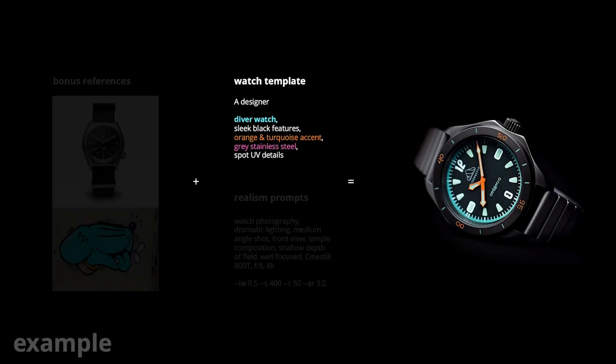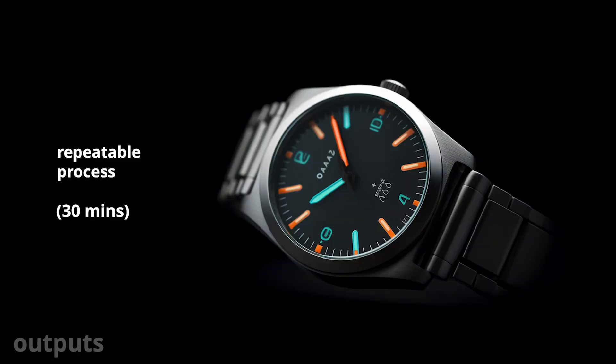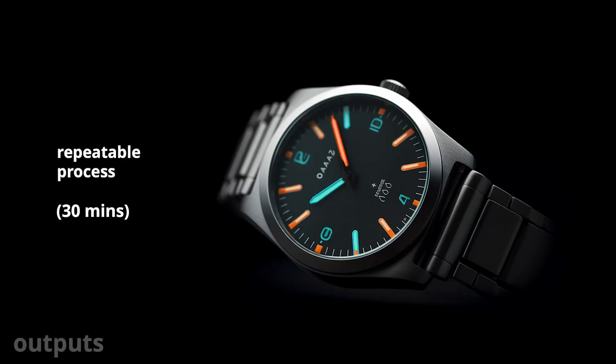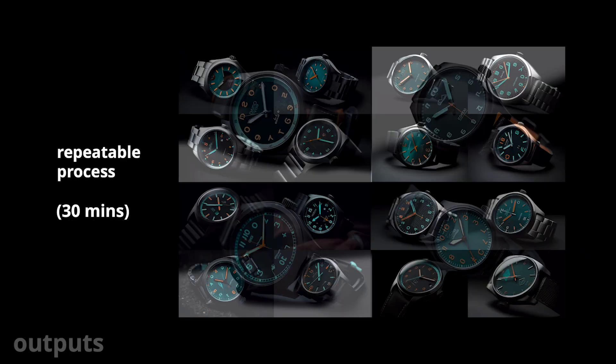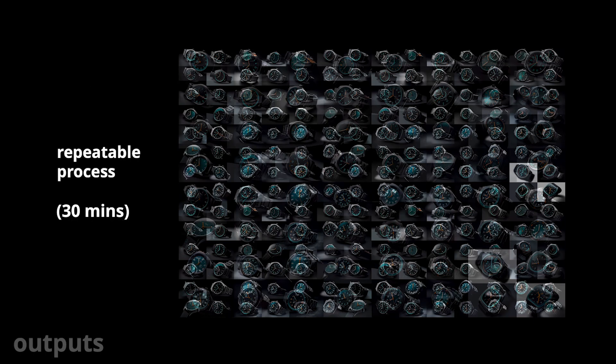In this template, you can adjust the type of watch that you want, such as a diver watch or a field watch. You can also change its color and materials as well. What's great about this process is that it's extremely repeatable, and I was able to generate many iterations within 30 minutes.